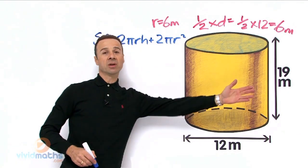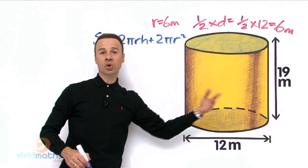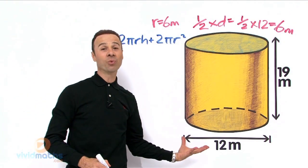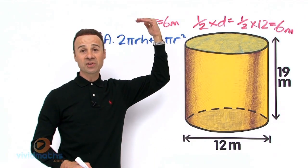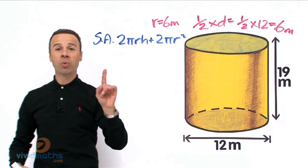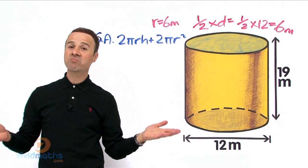Now the 2πrh is simply the cylinder surface around here, the curved surface, and the 2πr² is the top and the bottom. Now we are not interested in getting the top, are we? So we are taking that off because the lid is open. So it's not going to be 2πr², it's going to be 1πr², so we are just going to call it πr².